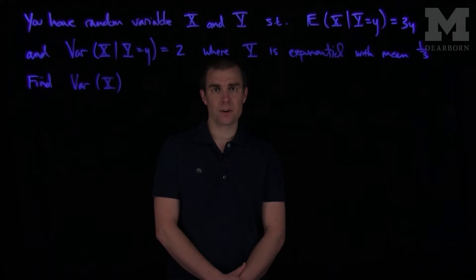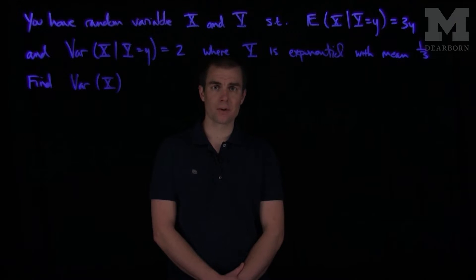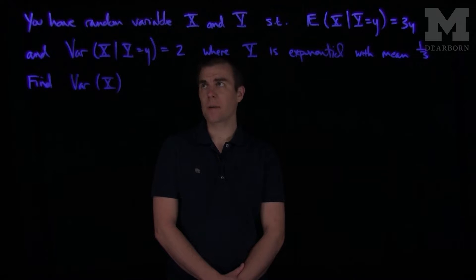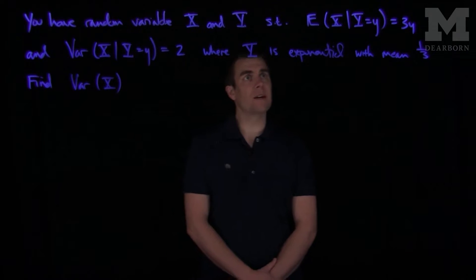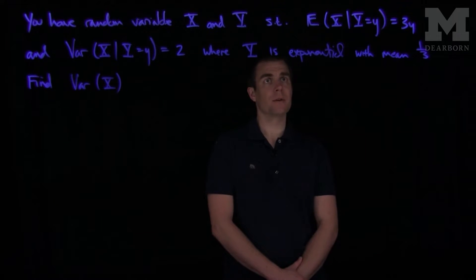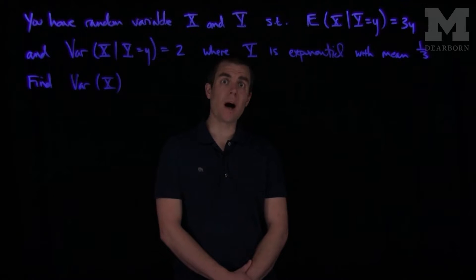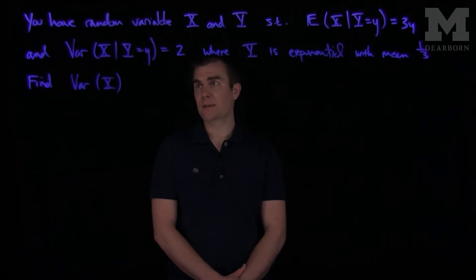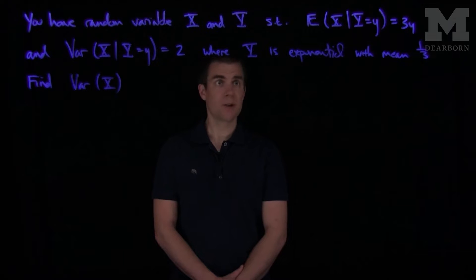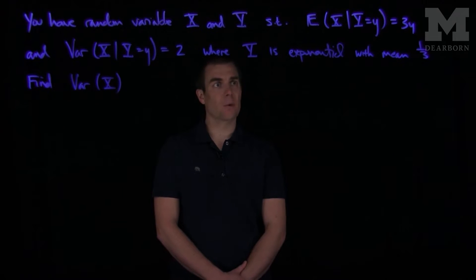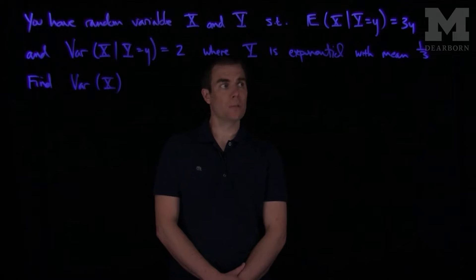Hello, students. In this video, we'll see the solution to the fifth problem in the quiz. In this problem, we're given two random variables x and y. We're given that the conditional expected value of x, given that y is equal to y, is 3y, and the conditional variance of x, given that y is y, is 2. It's also given to us that y is an exponential random variable with mean one-third.